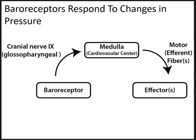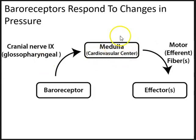The components of the baroreceptor reflex arc: baroreceptors in the carotid arteries, the arch of the aorta, and possibly the kidney respond to changes in pressure. From the baroreceptors, the stimulus travels up the afferent nerve — in this example, cranial nerve 9, the glossopharyngeal nerve. This serves as the sensory afferent nerve and sends the signal to the integrating center, which is the cardiovascular center in the medulla, where the sensory signal is integrated and processed.